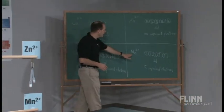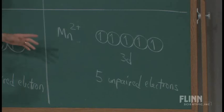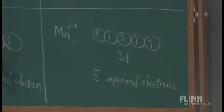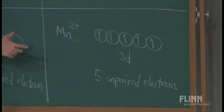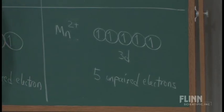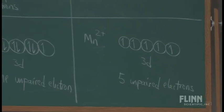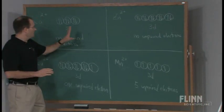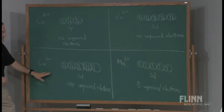The manganese 2+ ion has a total of 5 electrons in its outermost electron orbitals — a 3d5 electron configuration. We spend a lot of time talking about how electrons, being negatively charged, naturally repel each other and try to get as far away as possible. We see one electron in each of the respective orbitals, meaning we have 5 unpaired electrons. So: calcium and zinc have no unpaired electrons, copper has 1 unpaired electron, and manganese has 5 unpaired electrons. Calcium has no d orbitals present, while zinc, copper, and manganese all have d orbitals.